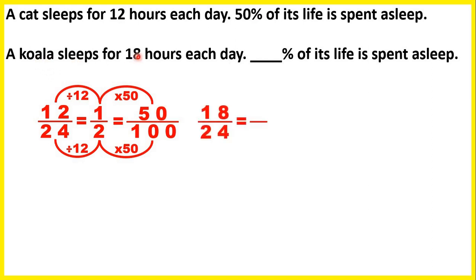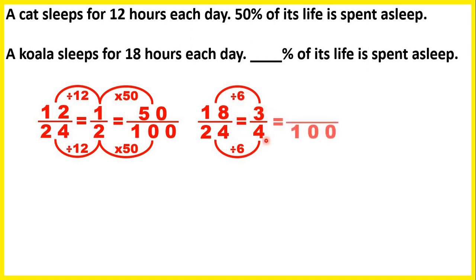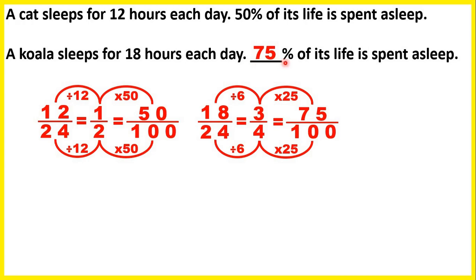We can do the same approach with the koala — it sleeps 18 out of 24 hours. We need to simplify. We can't divide by 12 because 18 is not in the 12 times table, but we can divide both numerator and denominator by 6. Dividing both by 6 gives us 3 quarters. We can find an equivalent fraction with denominator 100 because 4 times 25 is 100 and 3 times 25 is 75. So we get 75 hundredths, which is 75%.